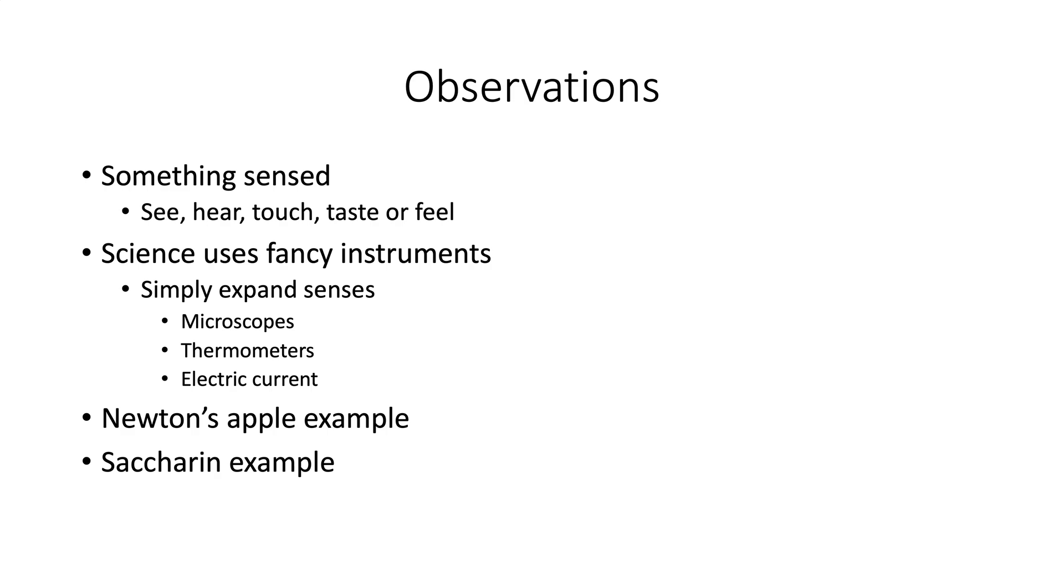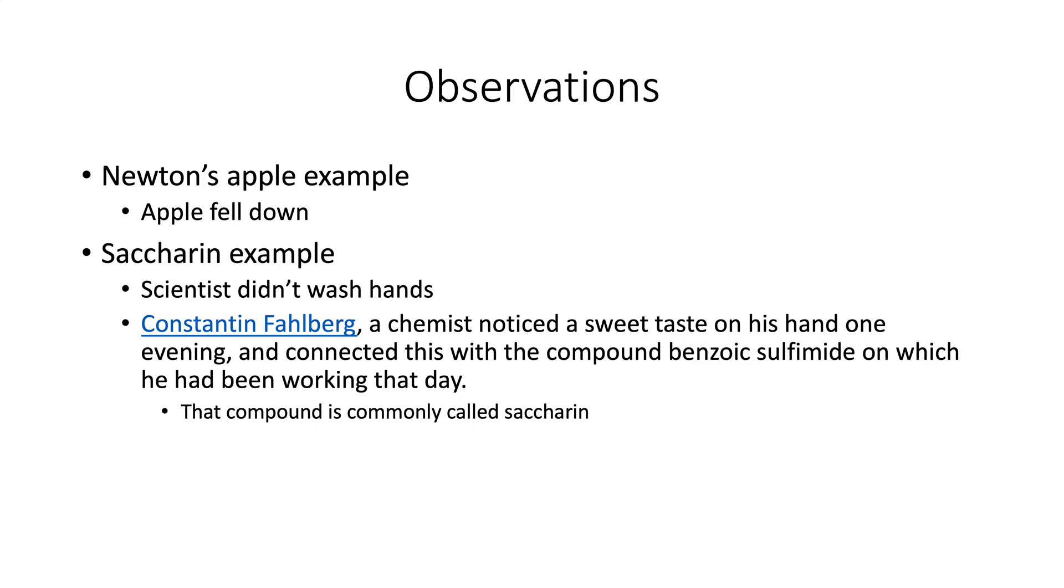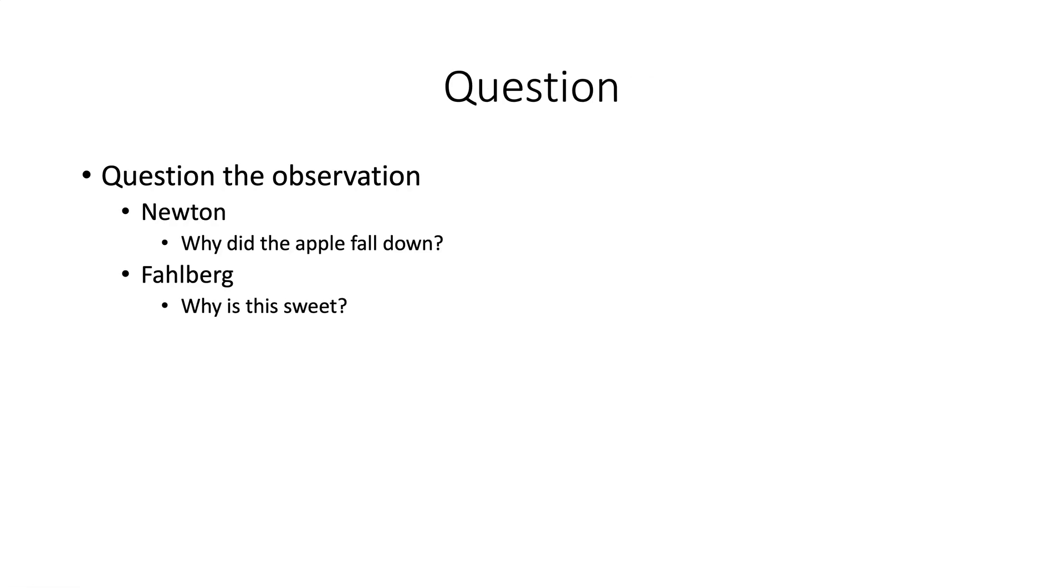Let's just do a couple of examples here. Newton's apple, right? The story of Isaac Newton's apple. Isaac Newton is sitting under an apple tree. An apple falls down. Newton makes an observation: the apple fell down. Saccharin is a sweetener, and this is a really interesting example. A scientist didn't wash his hands after he was working in the lab. His name was Konstantin Falberg, and he noticed a sweet taste on his hand one evening and put it together that it was from benzoic sulfimide, which is now saccharin. The observation was this tastes sweet.